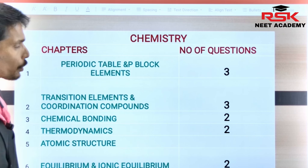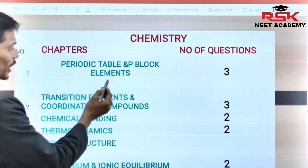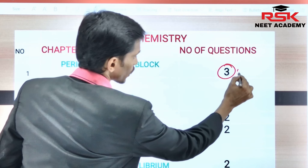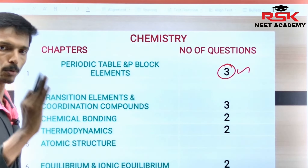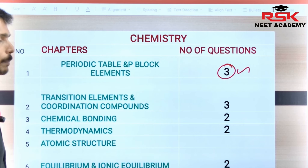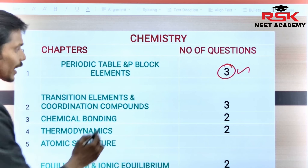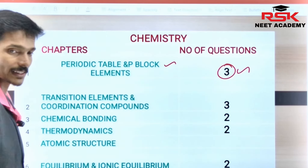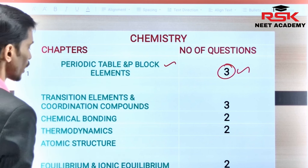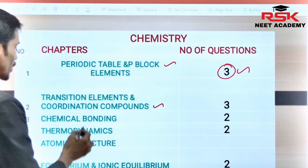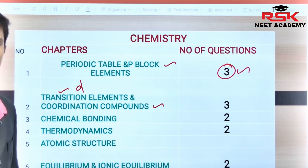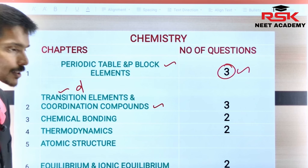If you take chemistry, there are periodic table and P-block elements. The maximum questions you can get from this is three questions. Transition elements and coordination compounds — these are D-block and F-block elements.